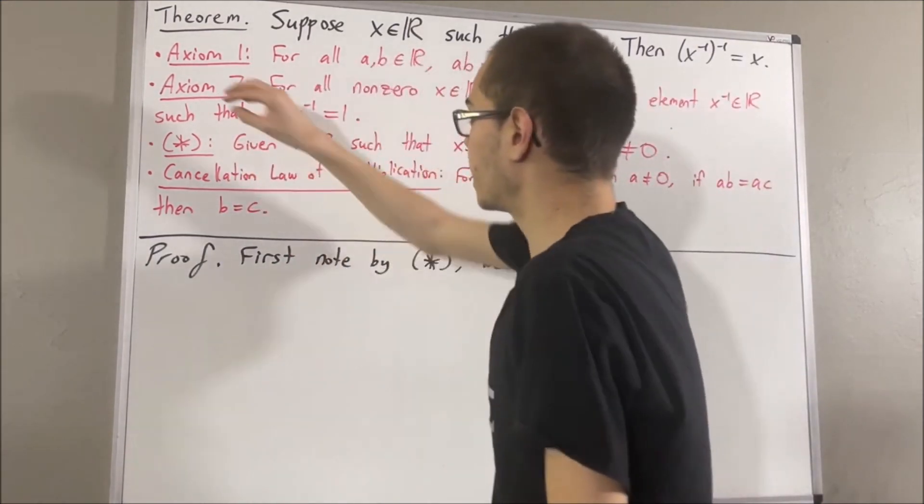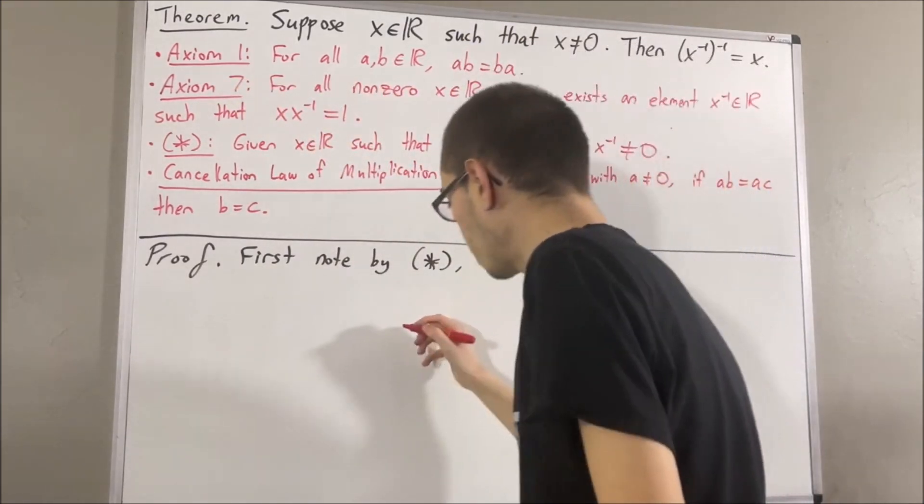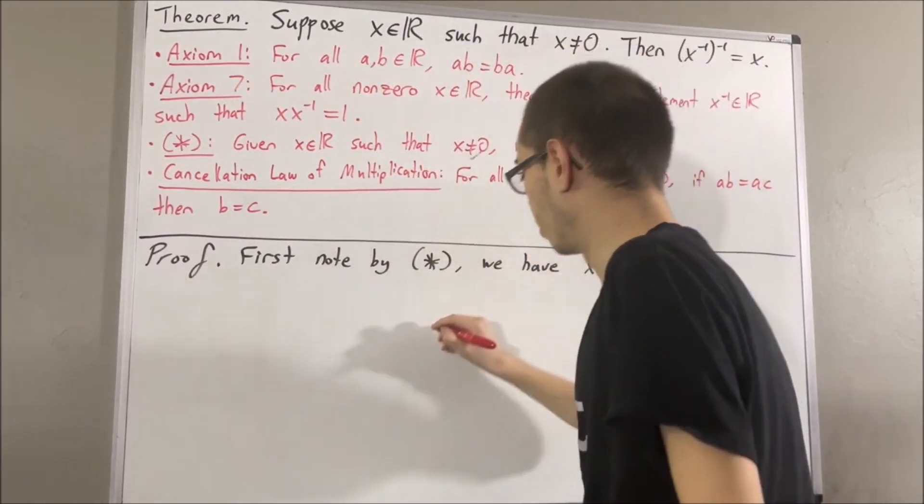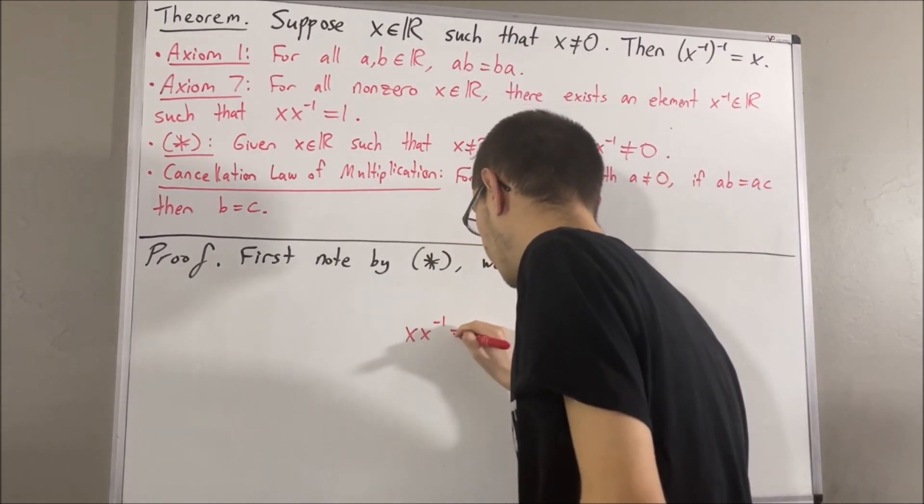And now, applying axiom 7, we first know since x is not equal to 0, we have x times the reciprocal of x is equal to 1.